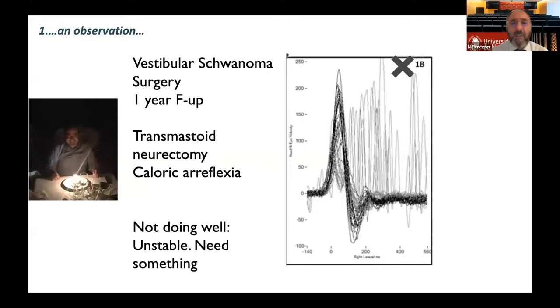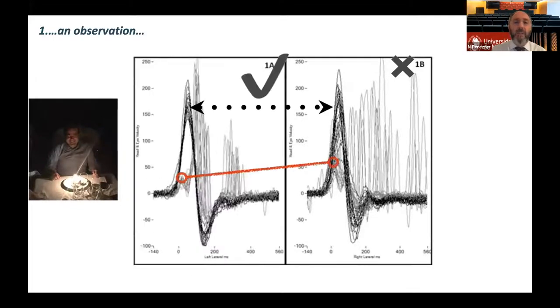This is another patient. He also had a vestibular schwannoma. He was treated with same surgery, transmastoid neurectomy. He's also in the one year follow-up. And on the caloric, very soon, he has a complete absence of response, a caloric areflexia. But this patient came to the hospital and now he's not feeling well. He's unstable, completely unstable. And he needs something to be done. Of course, you would say, let's move to vestibular rehabilitation. But the question came from just looking to both video head impulse tests.